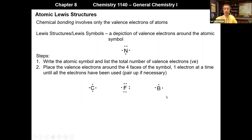Boron only has three valence electrons, so it doesn't matter where we start or which direction we go — we end up with one dot on three faces. My recommendation for writing these is to pick one method and stick to it consistently. If you want to start at the top and always work clockwise, that's fine — but stay consistent in your method.